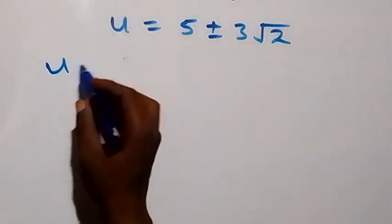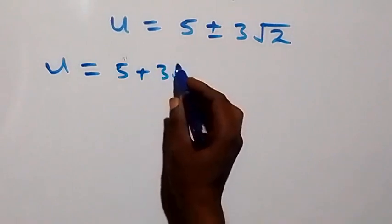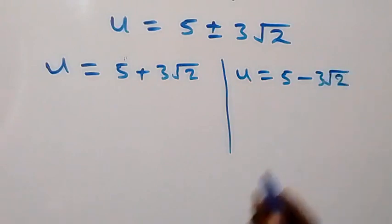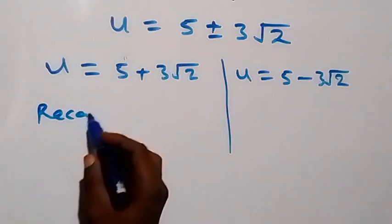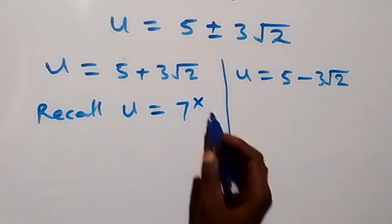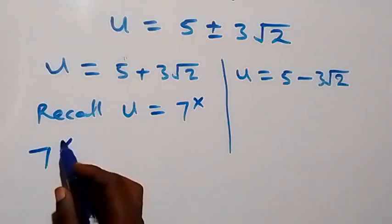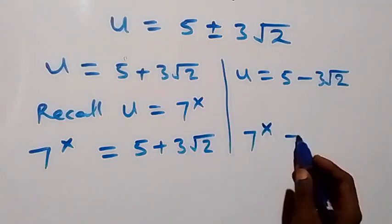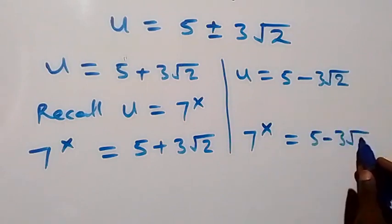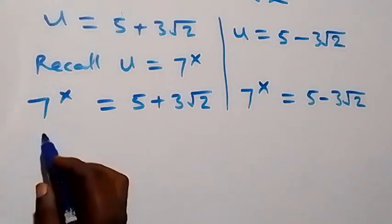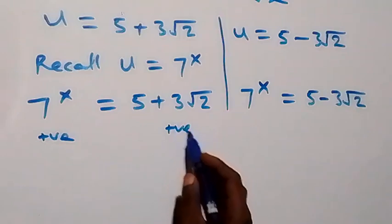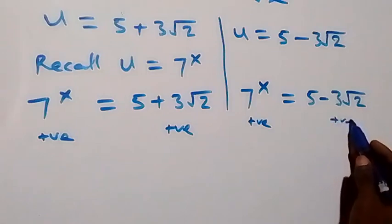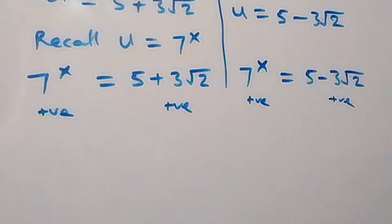So we have two cases: u equals to 5 plus 3 root 2, and u equals to 5 minus 3 root 2. Recalling that u represents seven raised to power x, we have seven raised to power x equals to 5 plus 3 root 2, and also seven raised to power x equals to 5 minus 3 root 2. Both right-hand sides are positive, so both cases are valid.